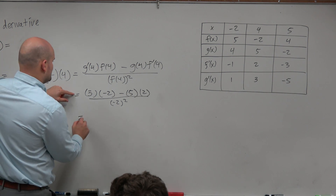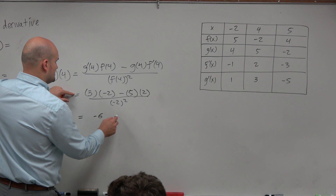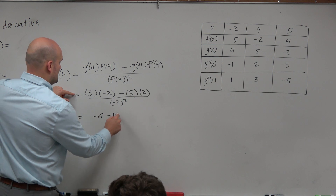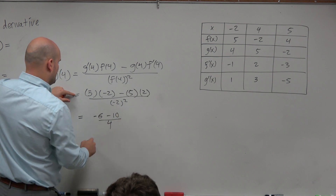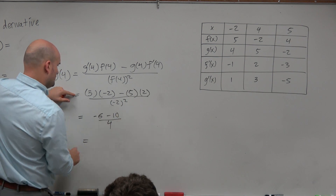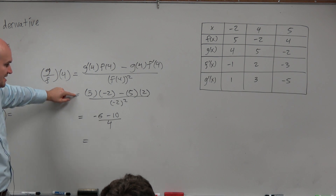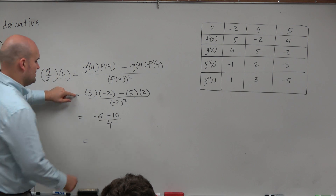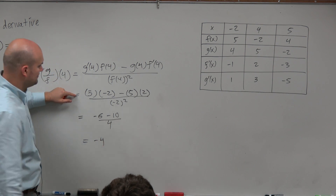So now we just simplify. 3 times negative 2 is negative 6, minus 10, all over positive 4. Negative 6 minus 10 is negative 16 divided by 4, which is negative 4.